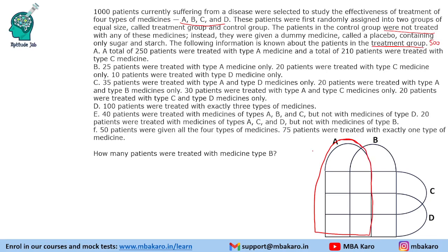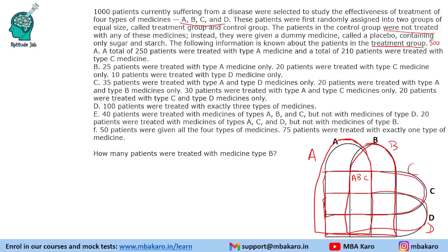In this Venn diagram, this region represents A, this region represents B, this complete region represents C, and this region represents D. Overlap regions represent combinations — for example, this is A, B and C also. This central region is all 4: A, B, C, D. You can see the overlapping regions and find out the values.